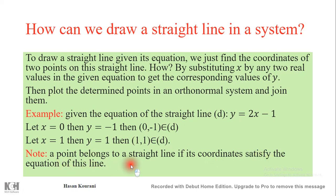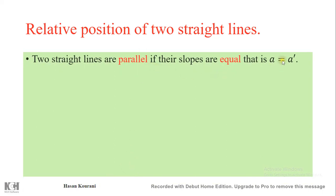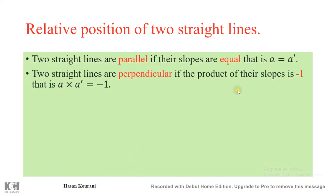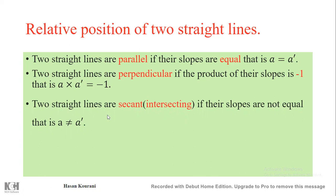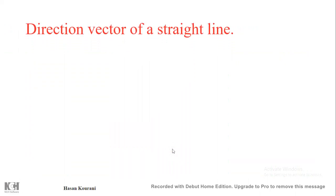Note: a point belongs to a straight line if its coordinates satisfy the equation of that line. Regarding the relative position of two straight lines: two lines are parallel if their slopes are equal; perpendicular if the product of their slopes is −1; intersecting (secant) if their slopes are not equal; and coincident if their slopes are equal and their y-intercepts are also equal.